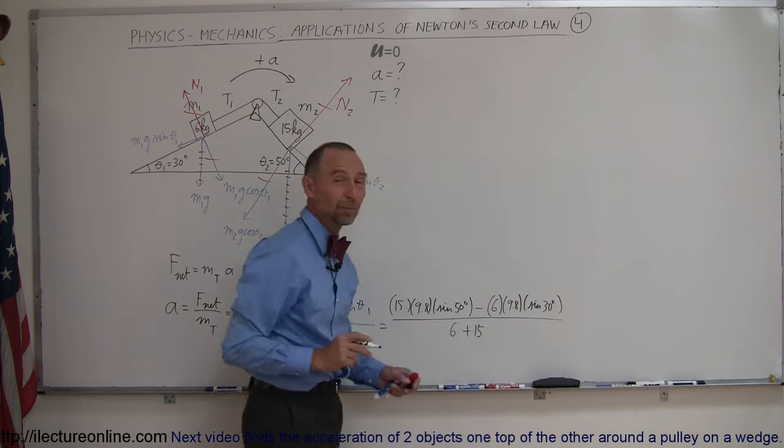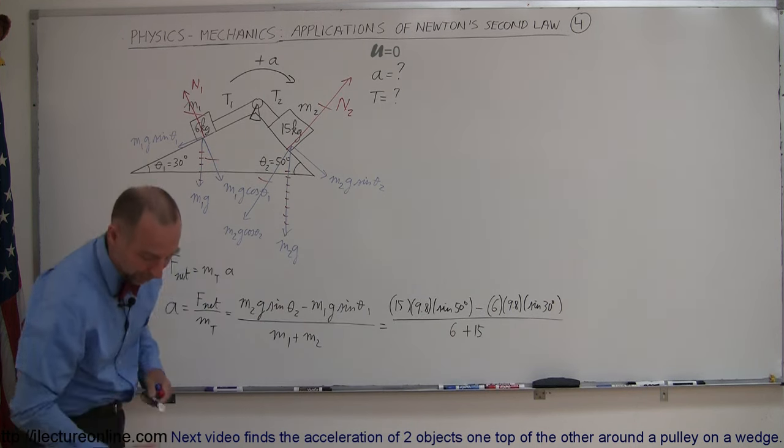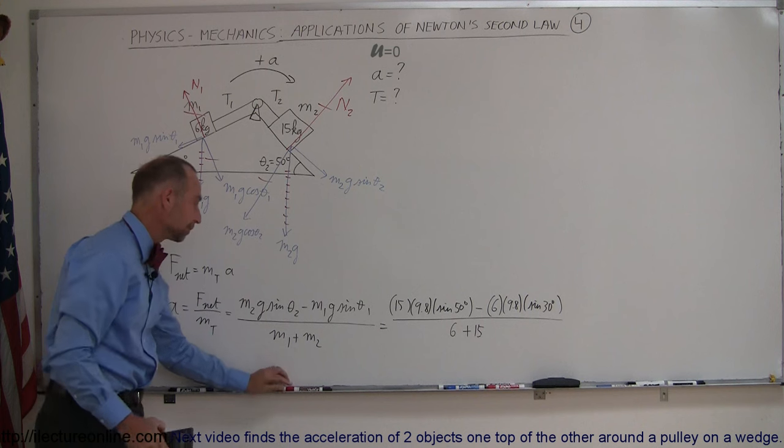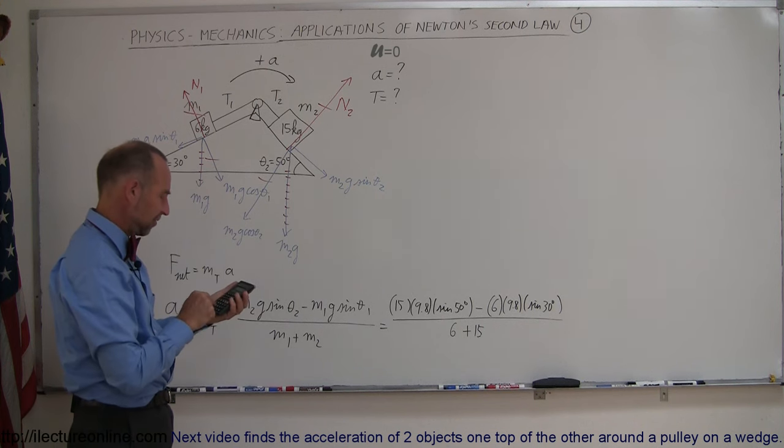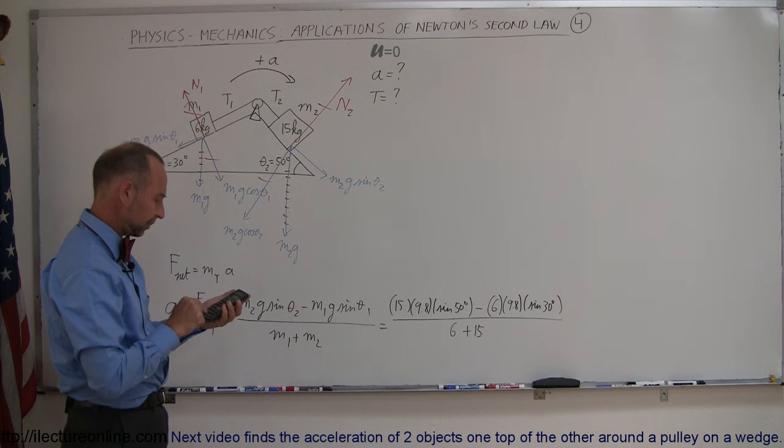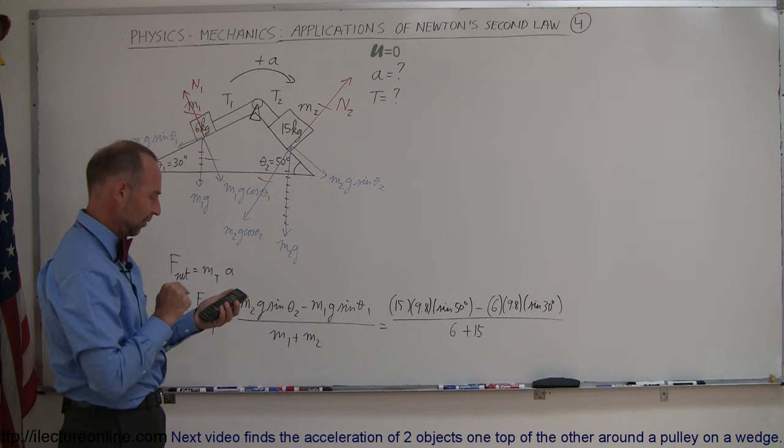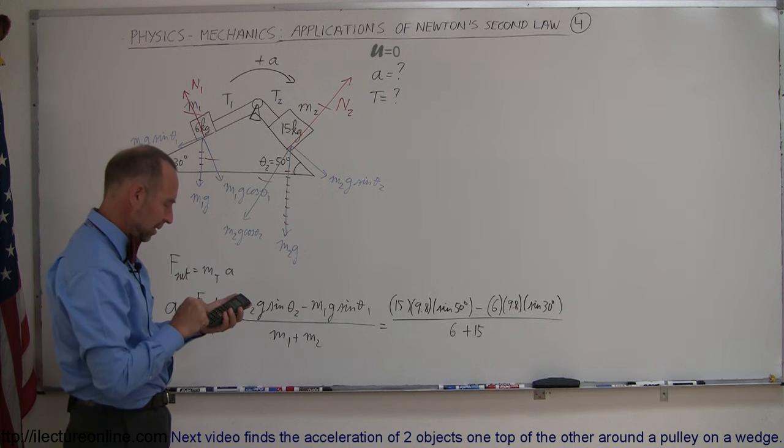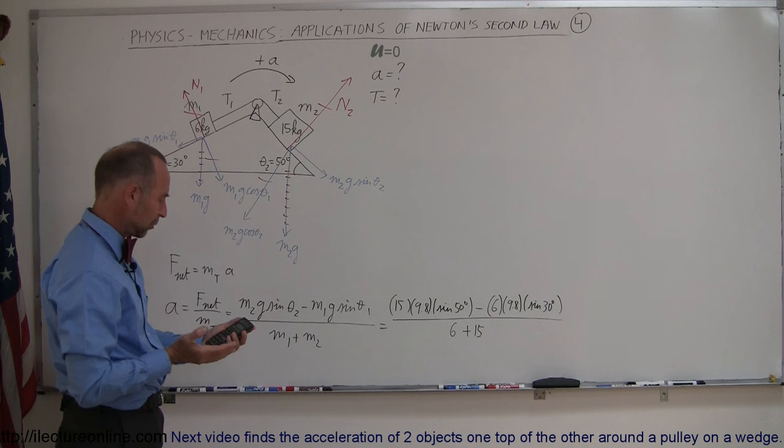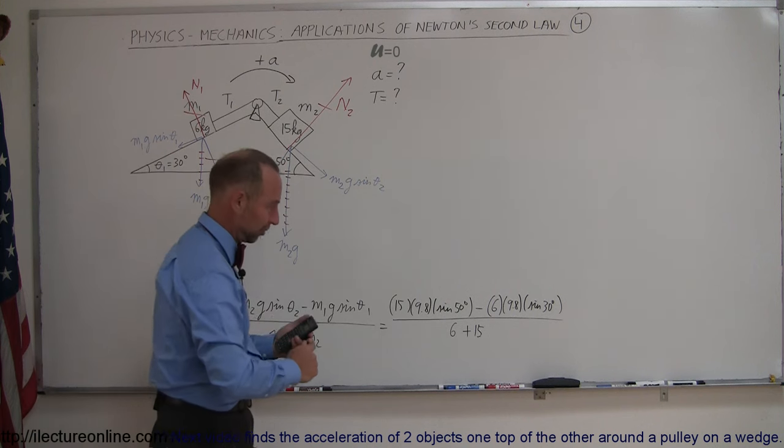So the units of this would be meters per second squared. So with a calculator what do we get? 15 times 9.8 times the sine of 50 minus 6 times 9.8 times 1.5 equals, and take that divided by 21. The acceleration would be 3.96 meters per second squared.